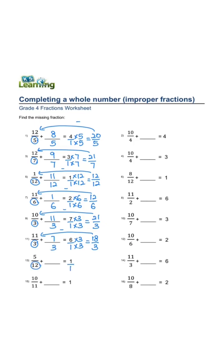denominator is 12. 1 times 12, 1 times 12 equals 12 over 12. 12 minus 5 is 7 over 12.